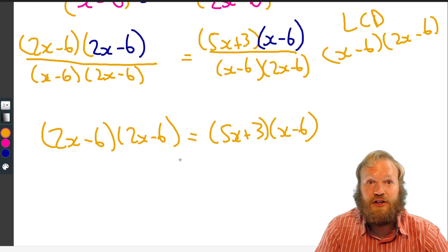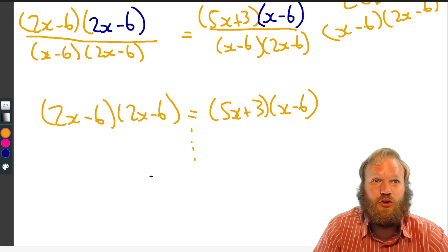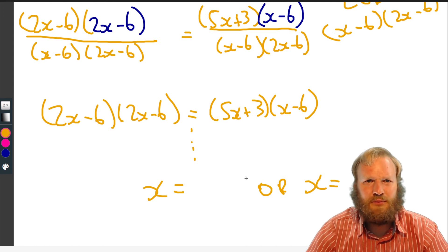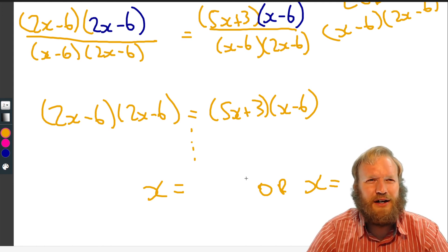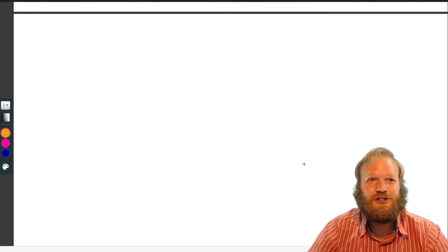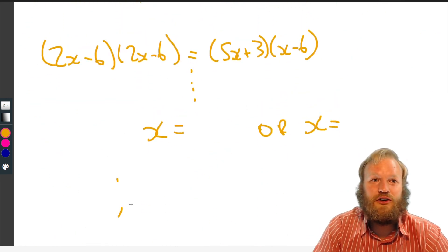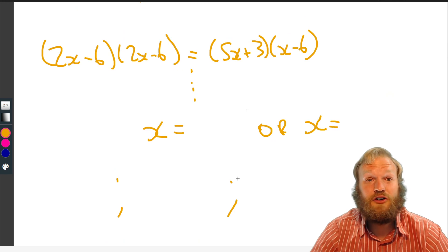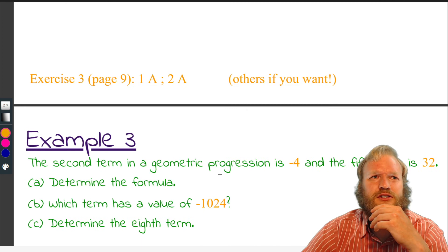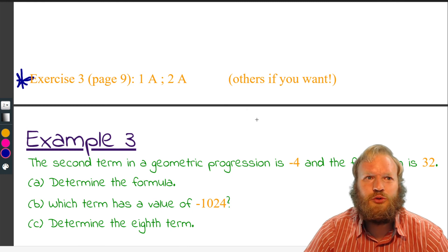If the denominators are the same, numerators are the same. So 2x minus 6, 2x minus 6 equals 5x plus 3, x minus 6. And so you're going to, I'm not going to go through solving this in this video. Solve quadratics before, and you're going to get two answers, x equals something, or x equals something else. I believe it was minus 6 and 9, but I can't remember or find, and I'm not going to check. Okay, so determine the formula. Well, once you've got x, you're going to fill in your first three terms, and you can go from there.